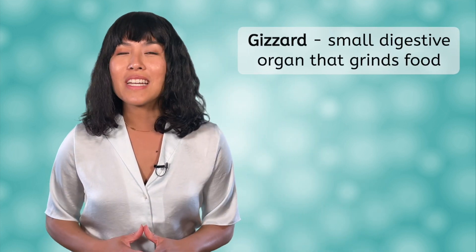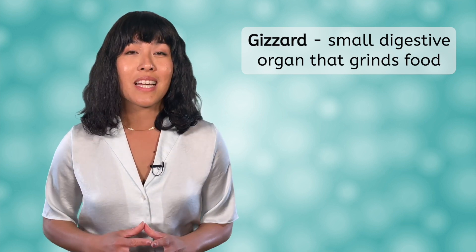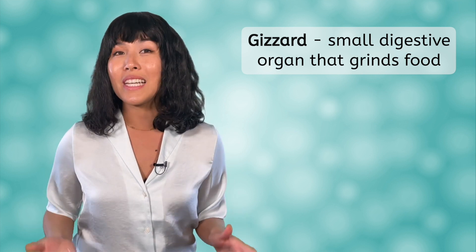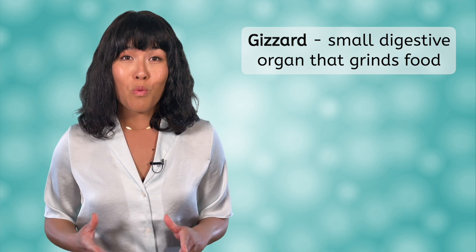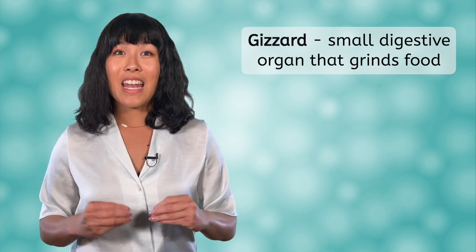The next time you are in the meat department at the grocery store, I want you to look for something called gizzards. This is an organ that is unique to birds, and in some cultures, is considered a delicacy. The gizzard is an organ in the digestive system in birds. It is found before the small intestines, and its main job is to grind the food that the bird eats. Some birds even swallow small rocks and pebbles that stay in the gizzard and help with the grinding.